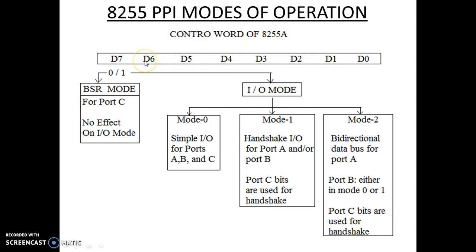Mode 1 is selected when D6 is 0 and D5 is 1. In Mode 1, the signals used are called handshake input-output signals. The 8255 acts as a strobed IO Mode — also called strobed IO Mode or handshake IO Mode — and can be utilized with Port C bits used for control signals, which are also called handshake signals.